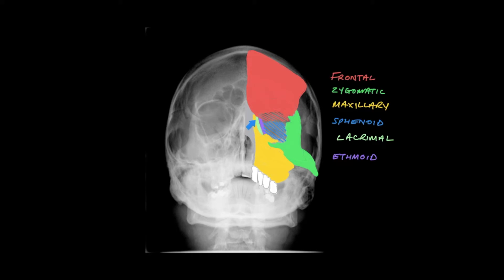This is the lacrimal bone, and although this doesn't directly contribute towards the bony orbit, I've shaded here the nasal bone so you can see it for reference. Here is the upper dental arcade closely related to the alveolar aspect of the maxillary bone.